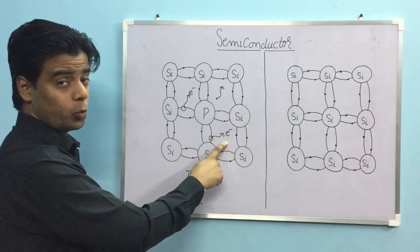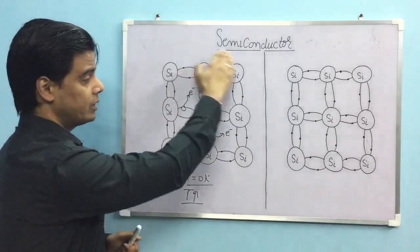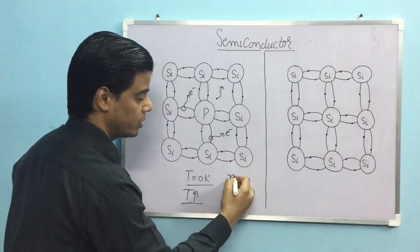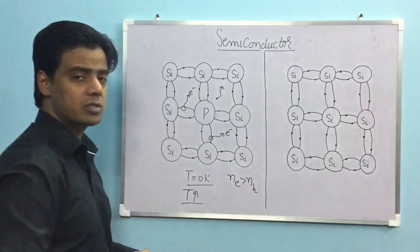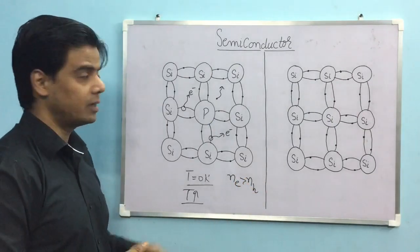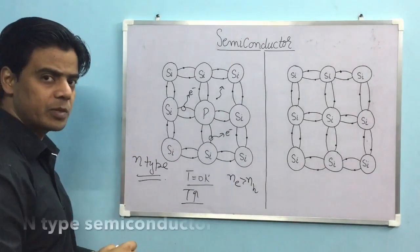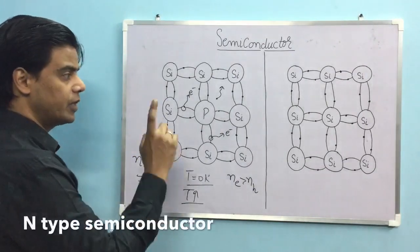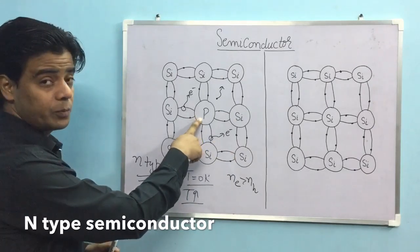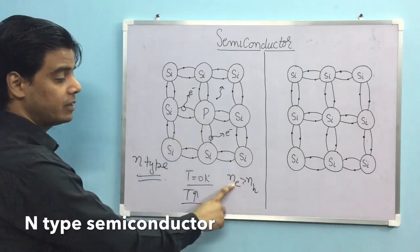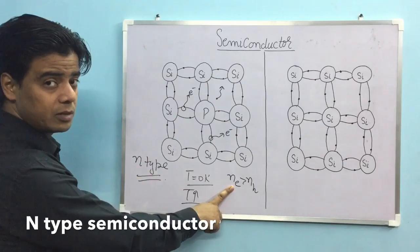Counting: 1, 2, 3 free electrons, but holes: only 1 and 2. Therefore, in this kind of semiconductor, the number of electrons is greater than the number of holes, and therefore this is called an N-type semiconductor. In an N-type semiconductor, we replace a silicon atom with a pentavalent impurity and we always get more electrons than holes.